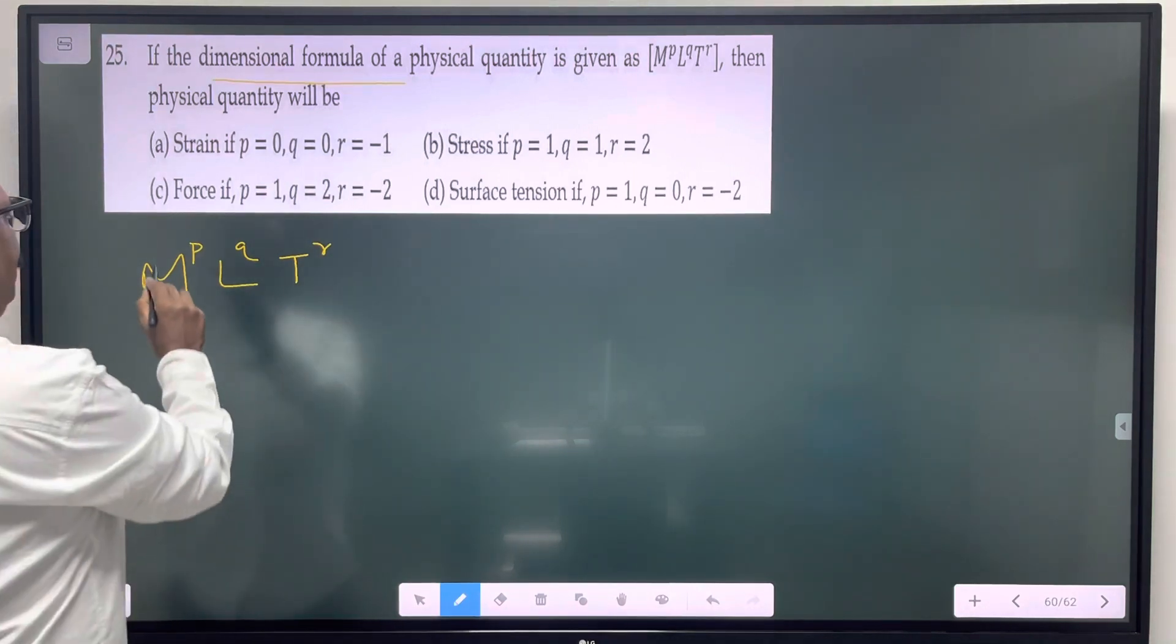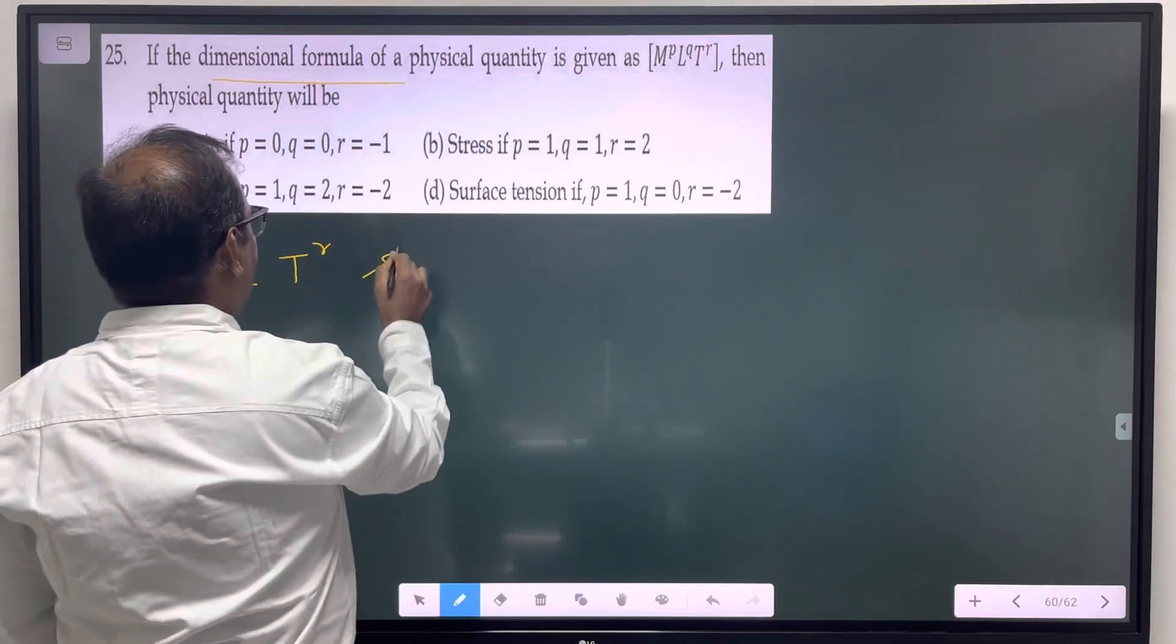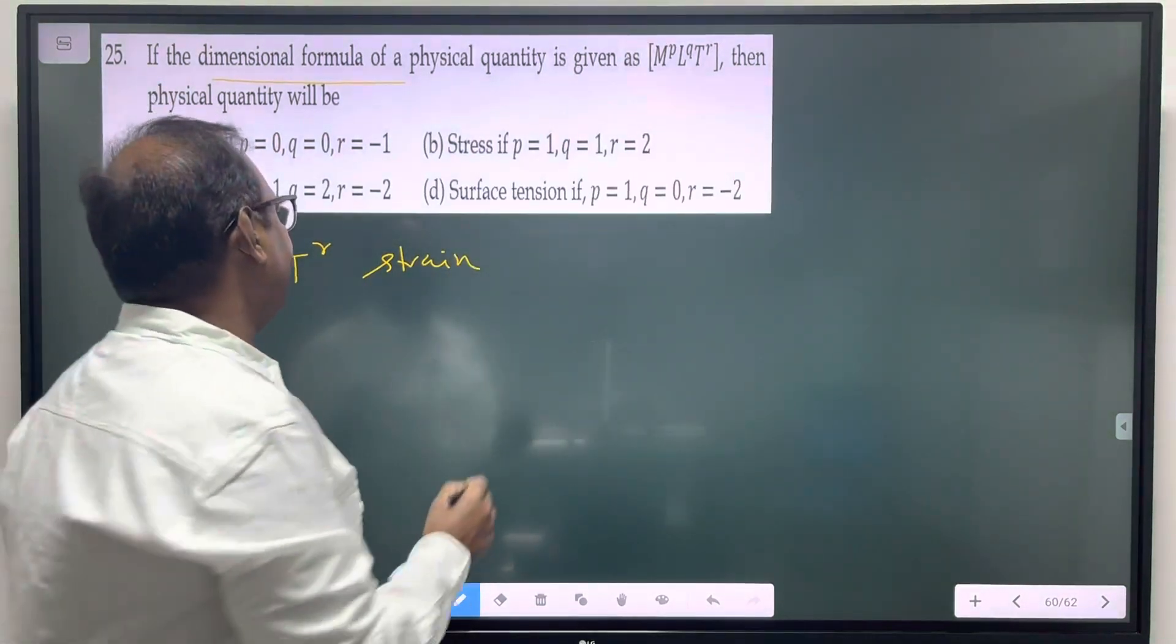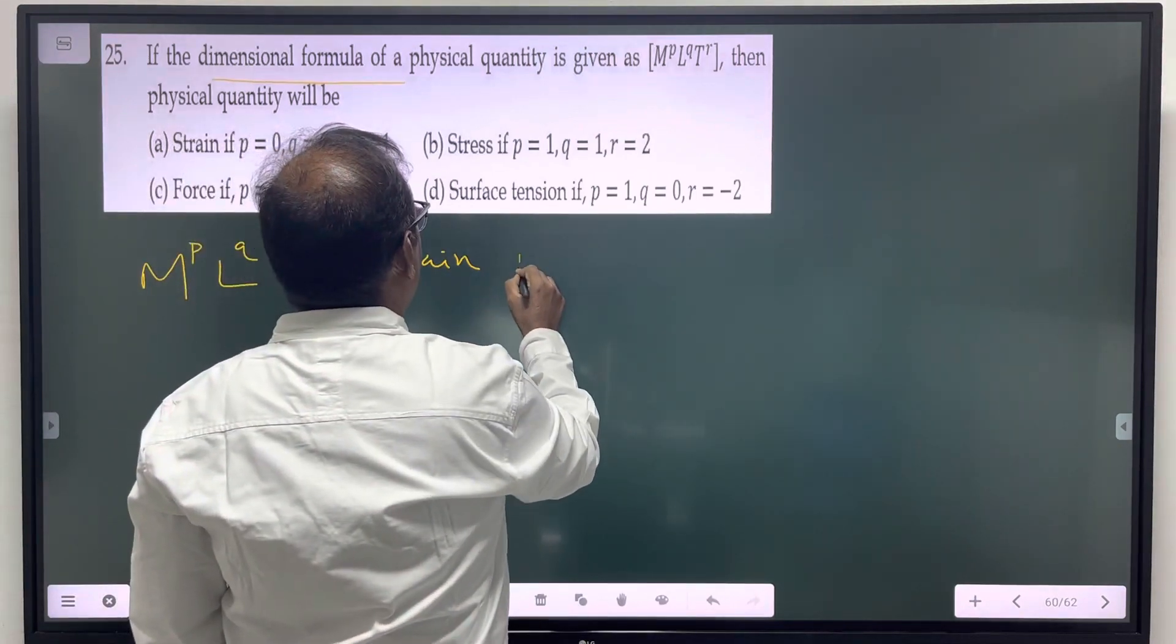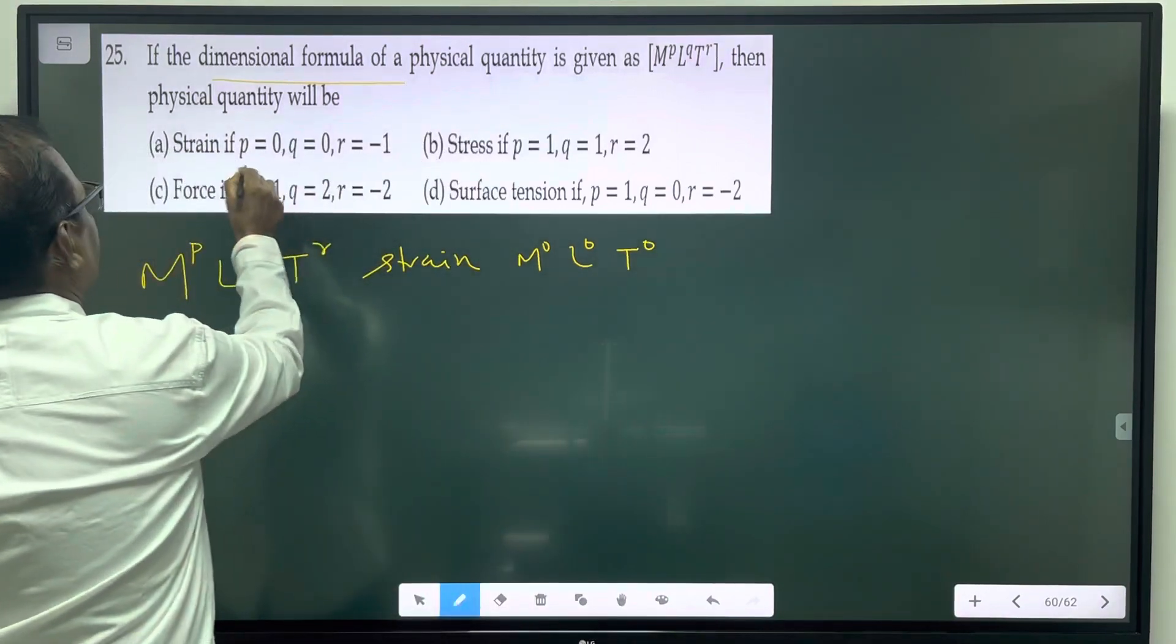In the PQR values, if it is strain - strain is unitless, a dimensionless quantity. It is M power 0, L power 0, T power 0. It is not.